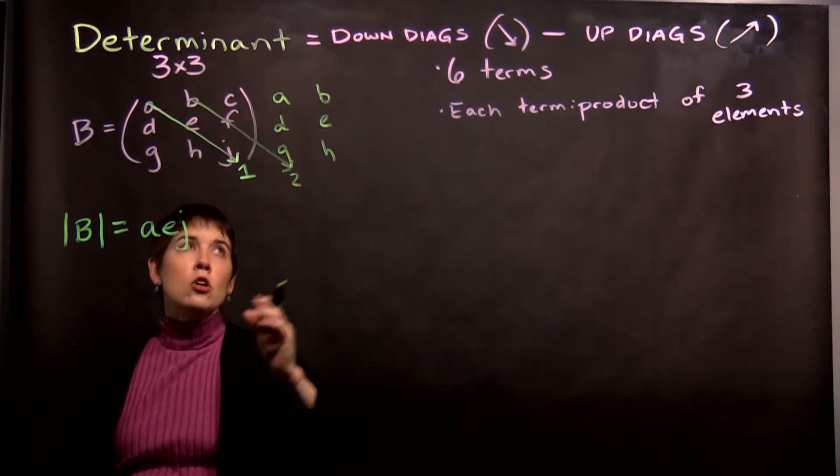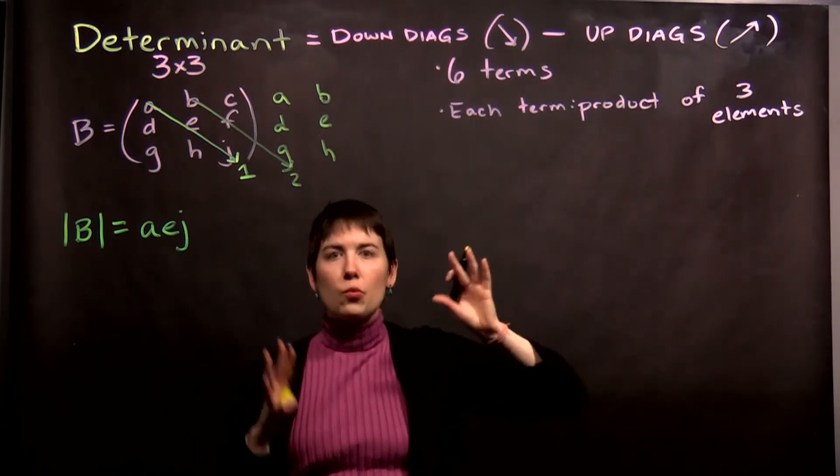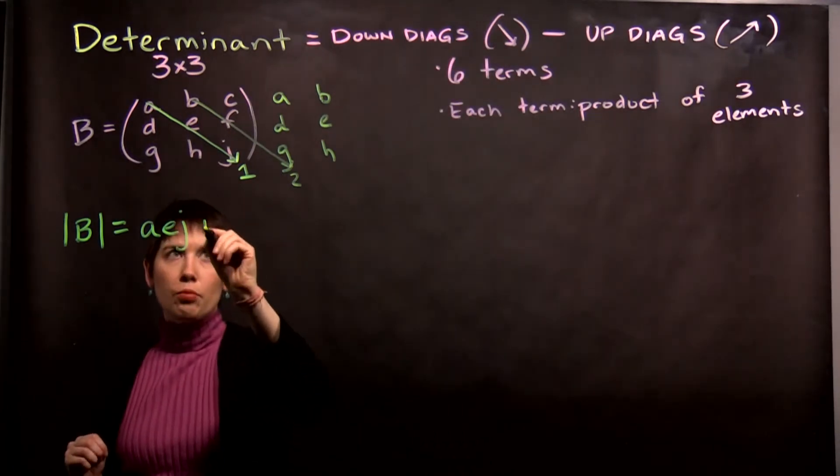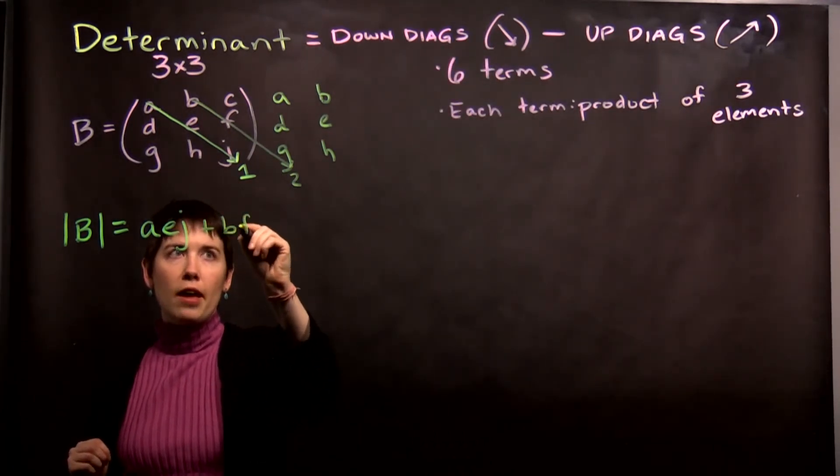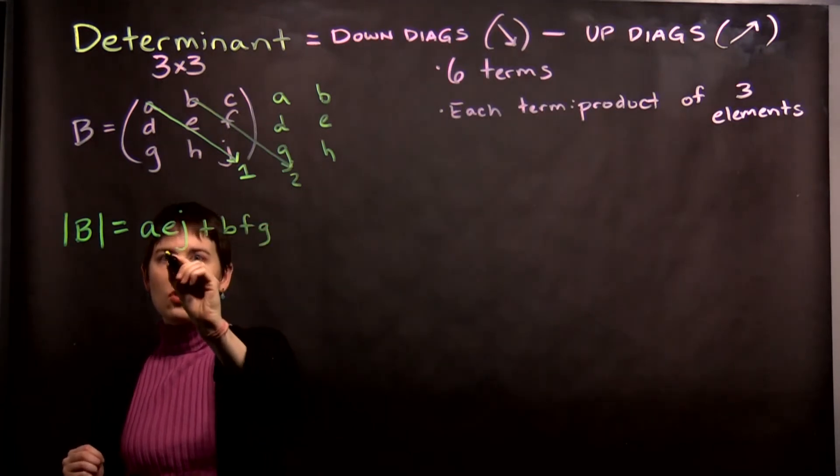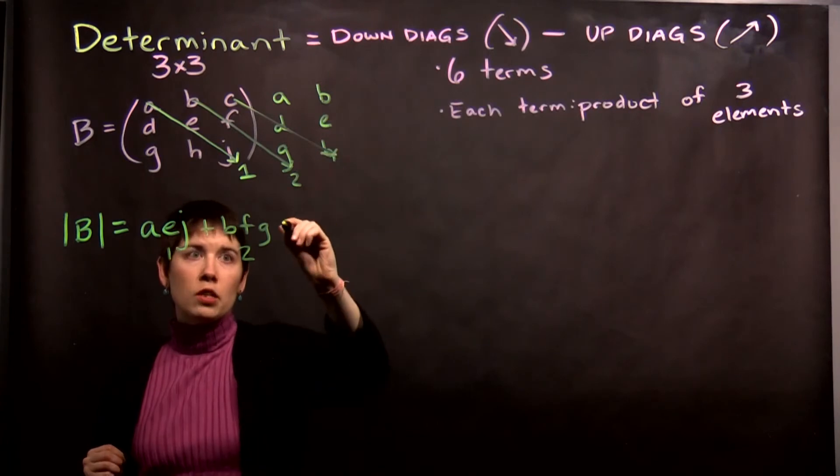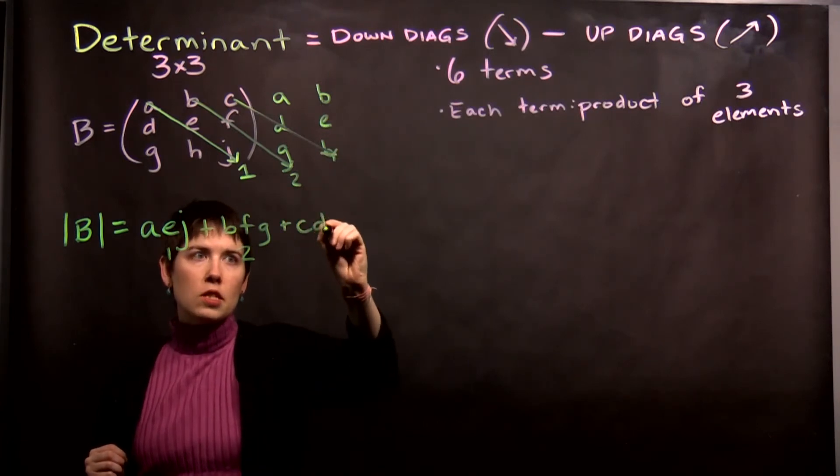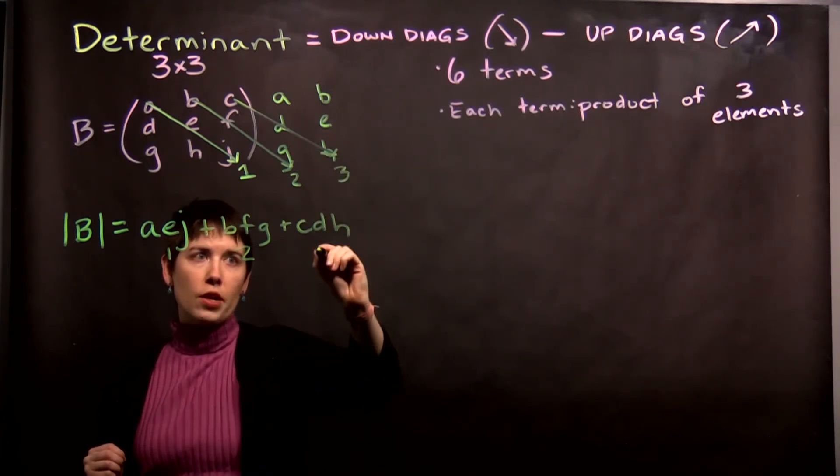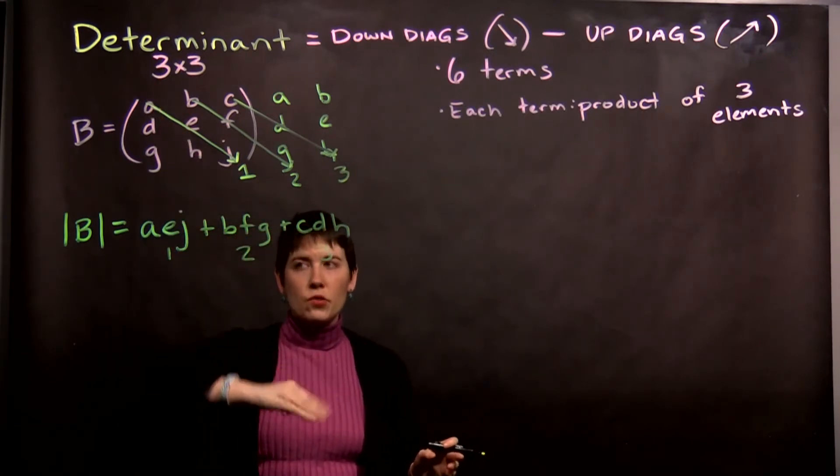This is 2. Here, our down-diagonals, we are adding these together. So, plus B, F, G. This was term 1, this is term 2. Term 3 is this one. C, D, H, term 3. Those are our down elements.